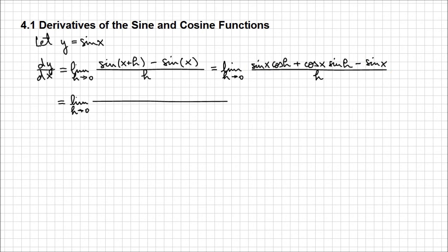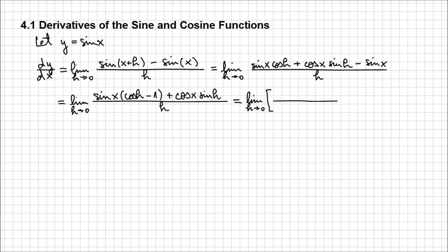We're going to continue with the limit when h approaches 0. Factoring out sine of x, we're left with cosine of h minus 1, plus the remaining term cosine of x sine of h, all over h. Now we want to separate this fraction into two fractions: sine of x times cosine of h minus 1 over h, plus cosine of x sine of h over h.